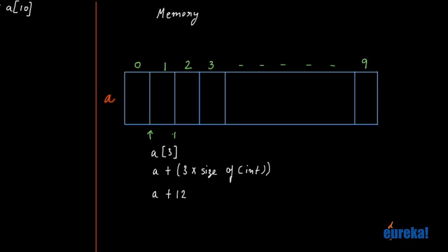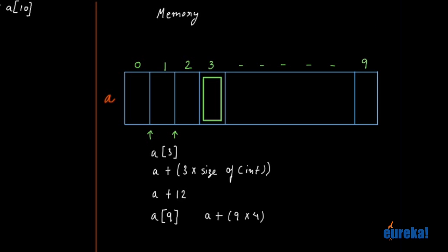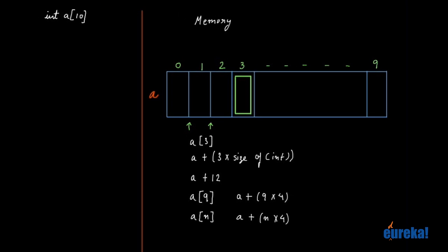Starting from the base address, adding 4, 8, 12 bytes — this is where the fourth block starts. So the math is simple. If I want to access A[9], you would just say A plus 9 times 4. In general, A[n] equals A plus n times sizeof(int), which is 4 in this case.